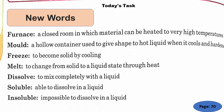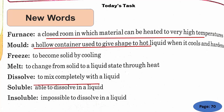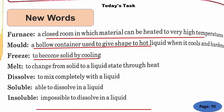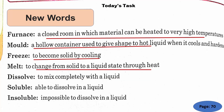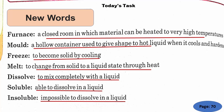Now we will see new words on this page. Furnace means a closed room in which material can be heated to very high temperatures — like a kiln where intense fire is used. Mold means a hollow container used to give shape to hot liquid when it cools and hardens. Freeze means to become solid by cooling. Melt means to change from solid to liquid state through heat. Dissolve means to mix completely with a liquid. Soluble means able to dissolve in a liquid. Insoluble means impossible to dissolve in a liquid.